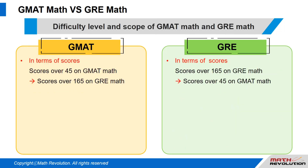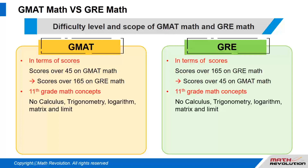In terms of scores, a student who can achieve scores above 45 on the GMAT math can achieve scores above 165 on the GRE math. Both exams are not that pleasant.